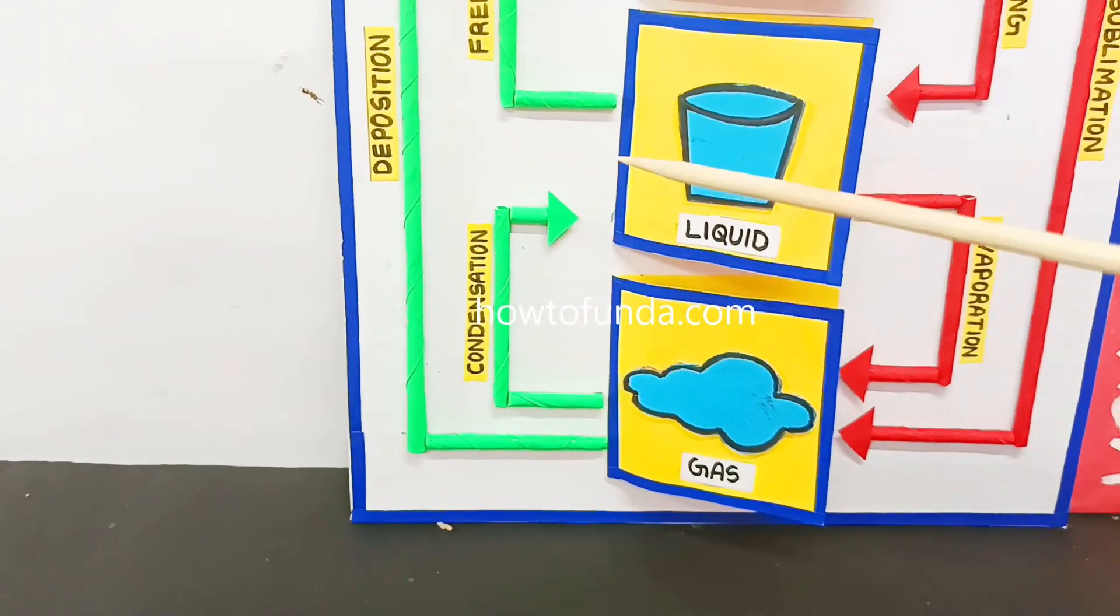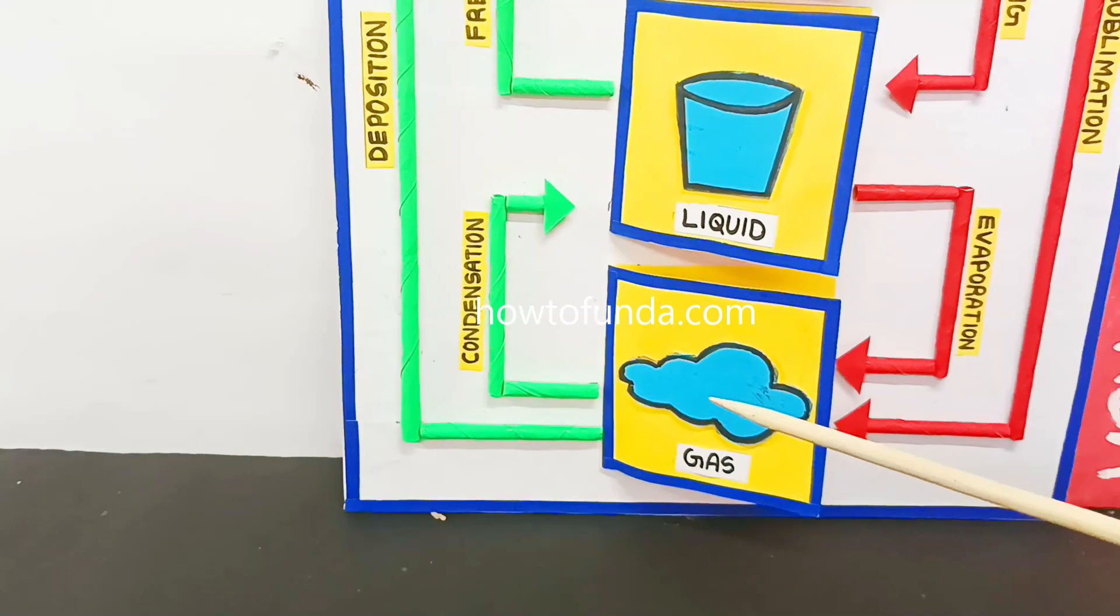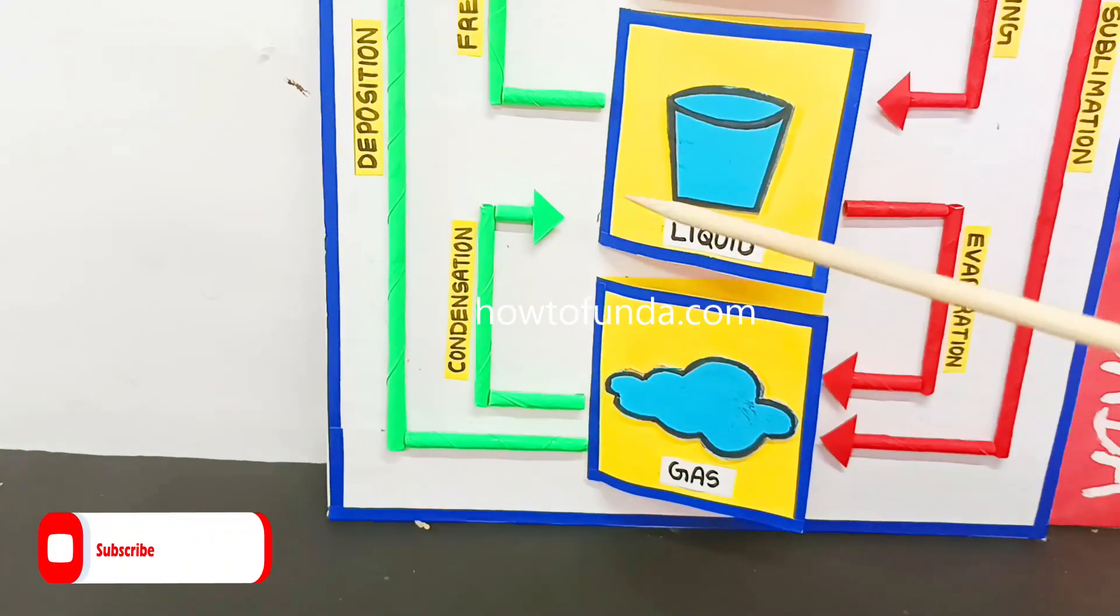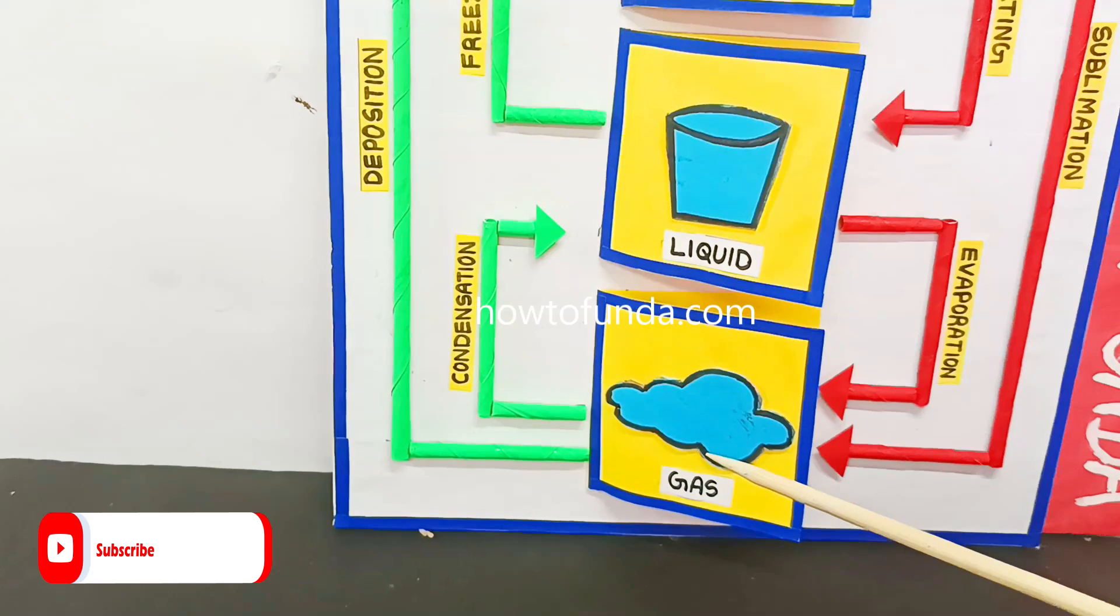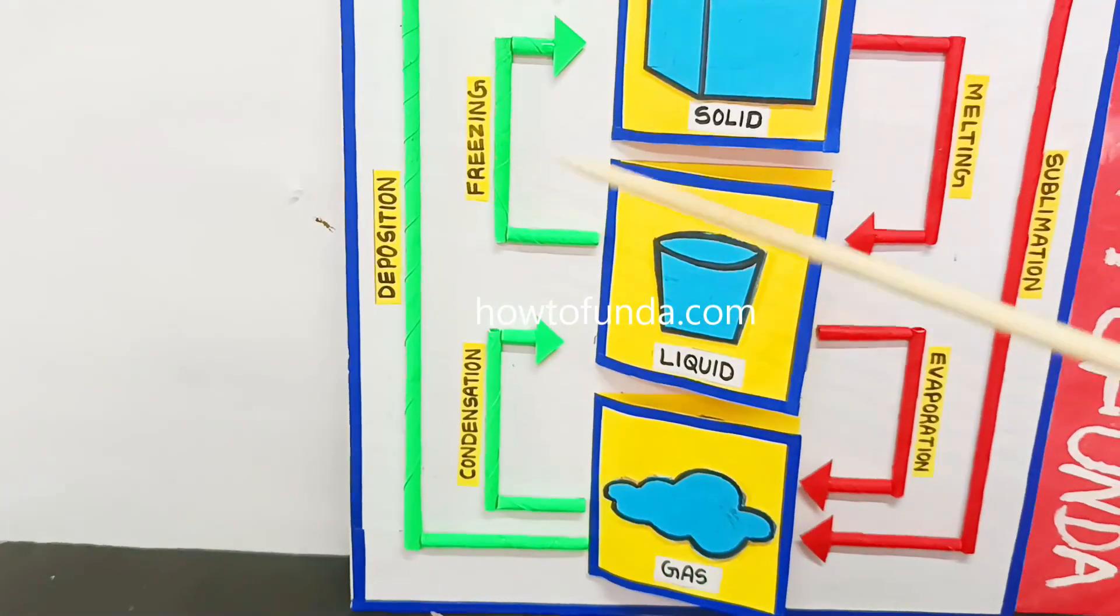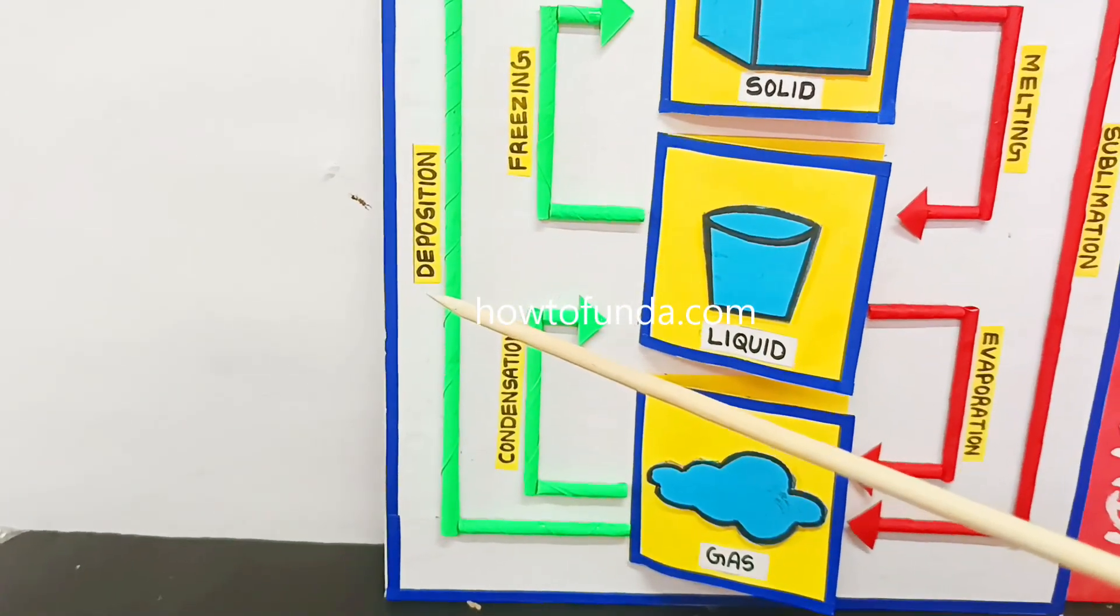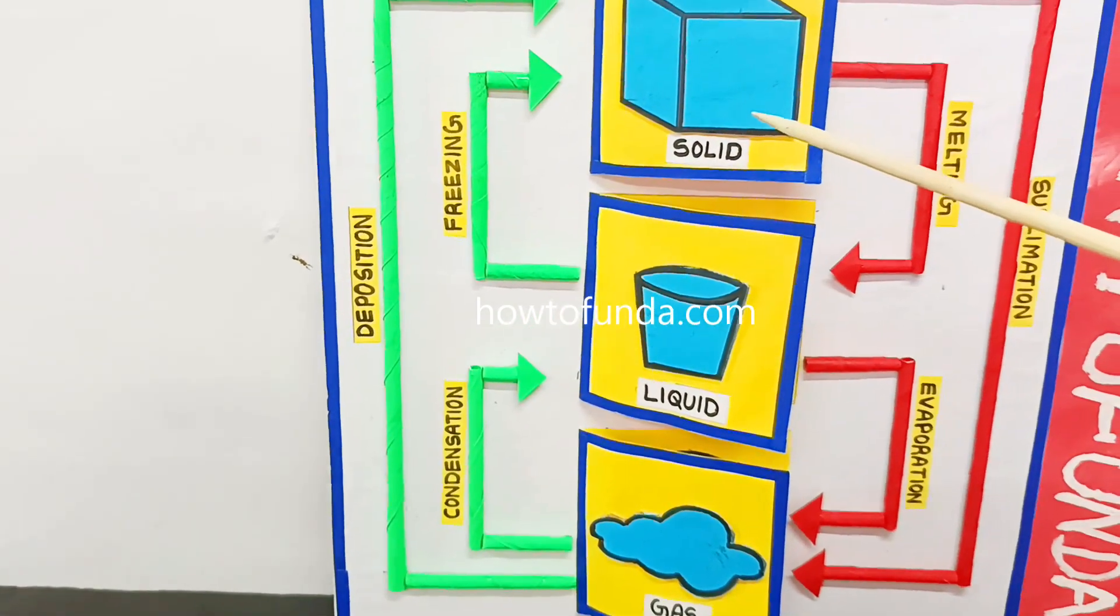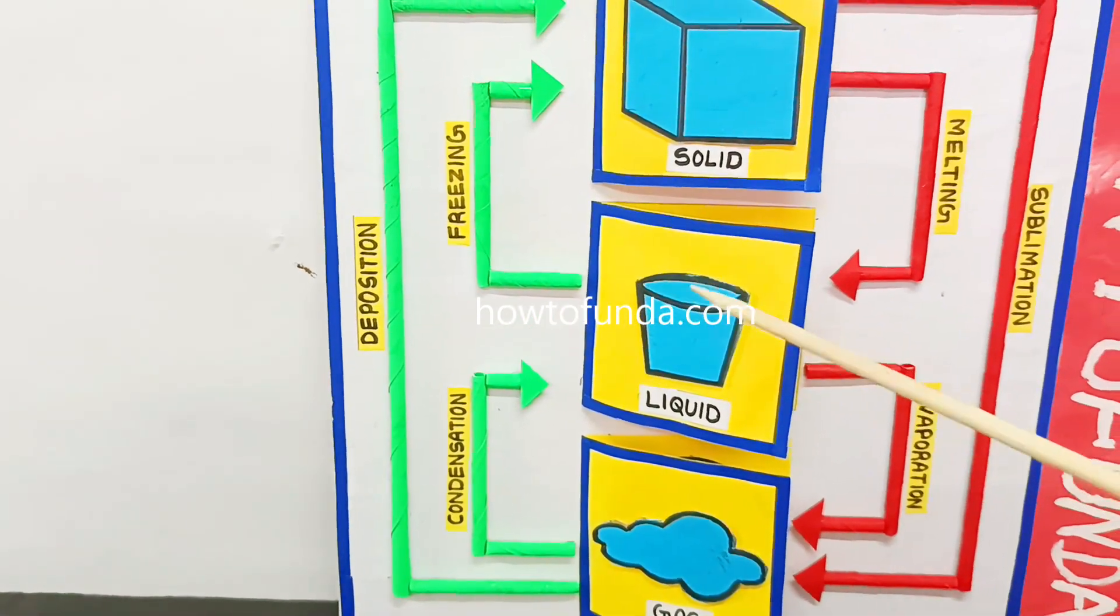Similarly, how the gas can be made into liquid - if condensation is happening, then it can form into a liquid. And again, gas can form into a solid state if we do deposition.